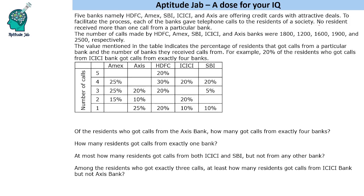No resident received more than one call from a particular bank. These banks and the number of calls they made are given to us, and we are also given a table along with it. The value mentioned in the table indicates the percentage of residents that got calls from a particular bank and the number of banks they received calls from.